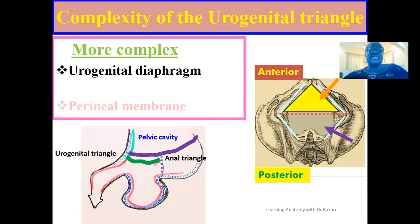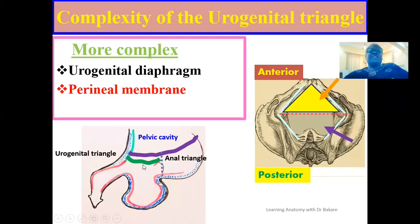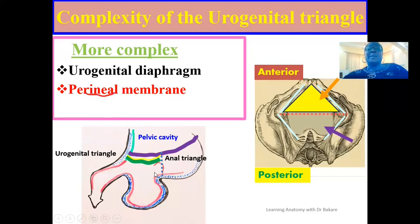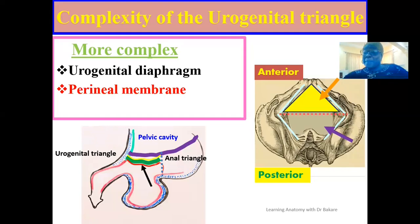Also within this urogenital triangle, we have the perineal membrane. The structure elected in green is the urogenital diaphragm. This urogenital diaphragm is superiorly bounded by the superior fascia of the urogenital diaphragm, elected here in yellow, and also inferiorly bounded by the inferior fascia of the urogenital diaphragm, elected here in red. This inferior fascia is what is specifically referred to as the perineal membrane, and this is the basis onto which the urogenital triangle is further subdivided into pouches.